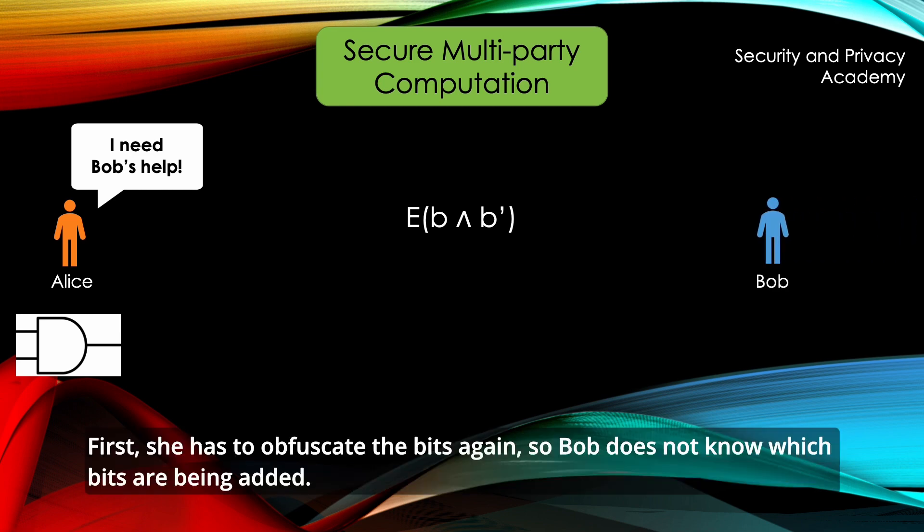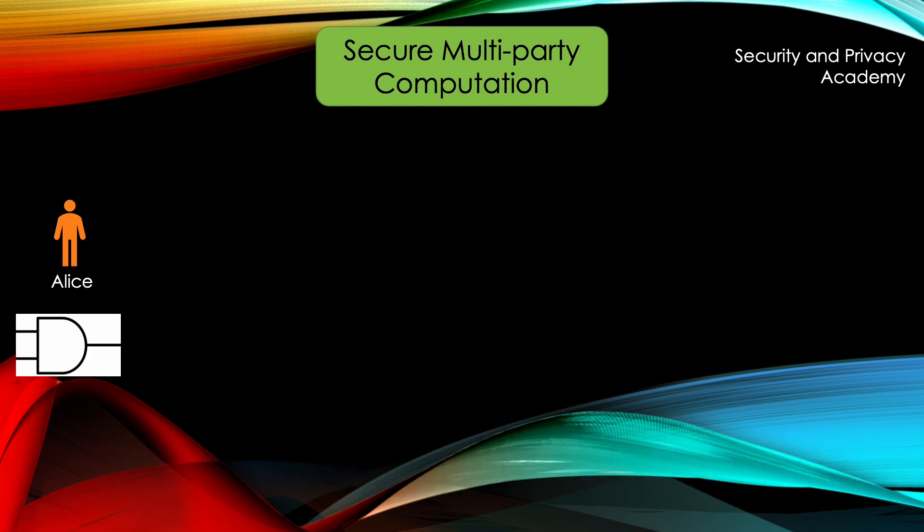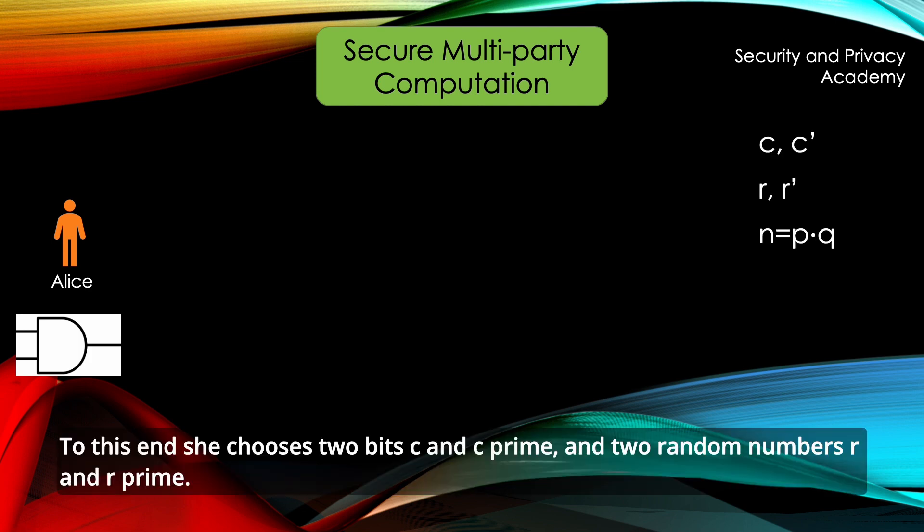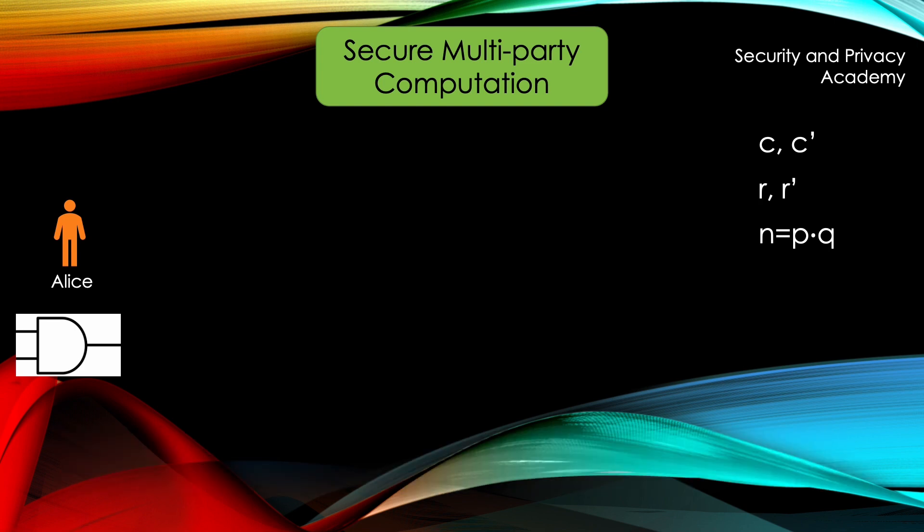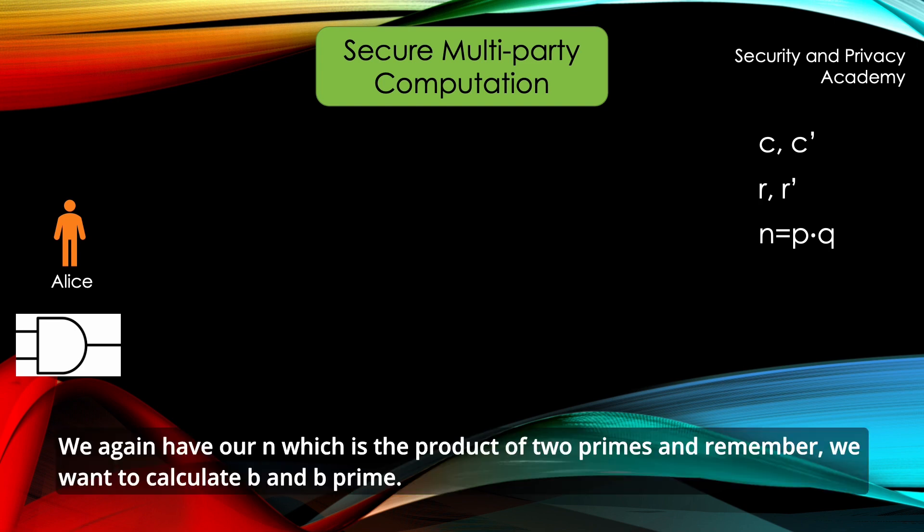First, she has to obfuscate the bits again so Bob doesn't know which bits are being added. To this end, she chooses two bits C and C', two random numbers R and R', and we again have our N, which is the product of two primes. Remember, we want to calculate B and B'.